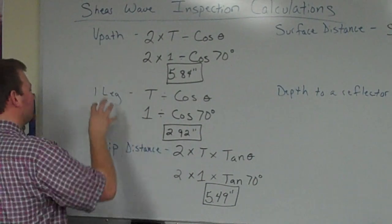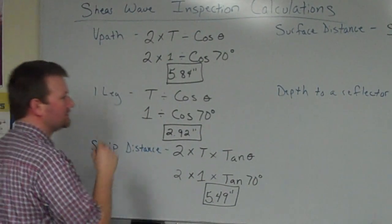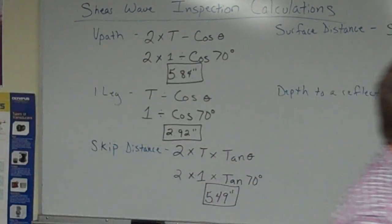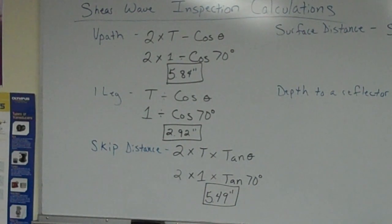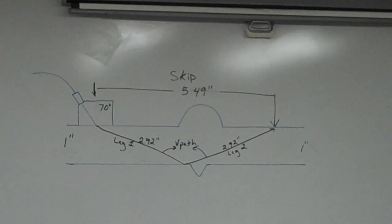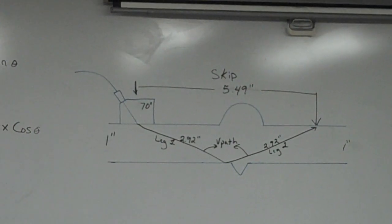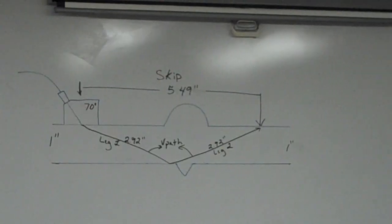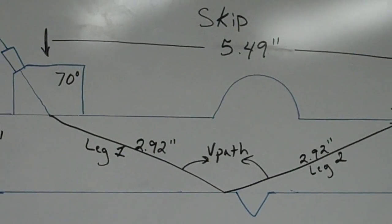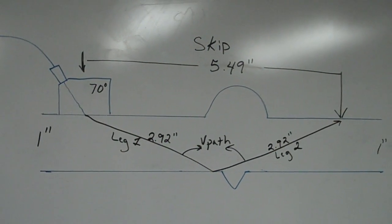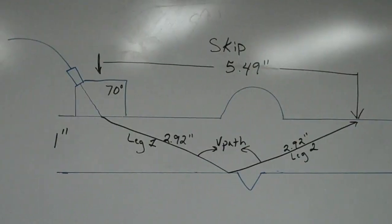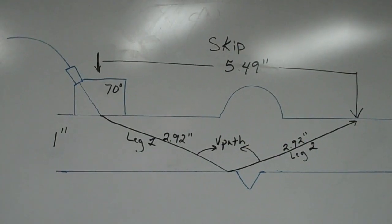So I wrote up some shear wave calculations, which you guys are messing with this week if you haven't got to them already. Just kind of wrote out one example of each and then I want to show you where that comes from. So if you see a v-path, if you see a one leg, if you see a skip distance, you're actually visualizing this over here.